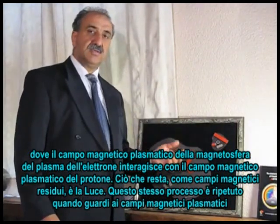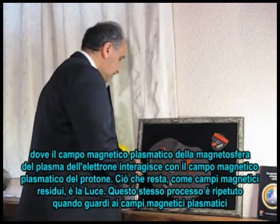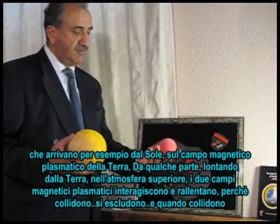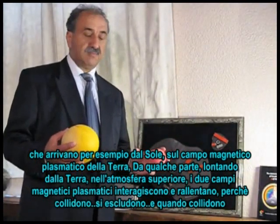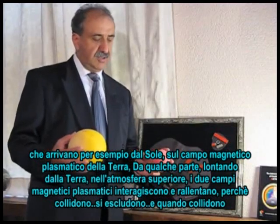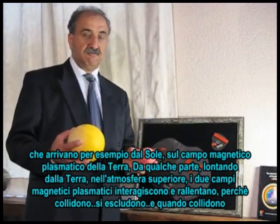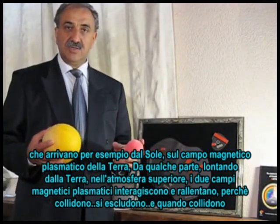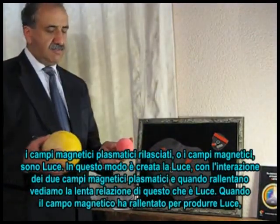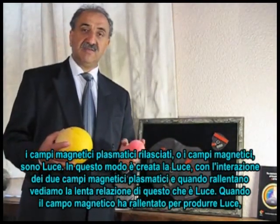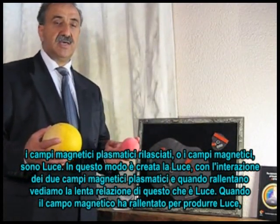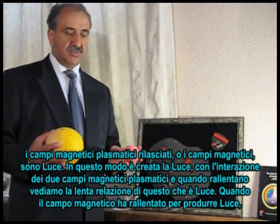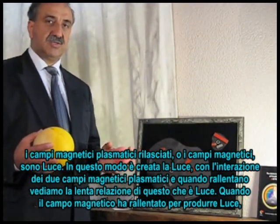This same process is repeated when we look at the plasmatic magnetic fields arriving from the sun to the plasmatic magnetic field of the earth. Somewhere in the upper atmosphere the two plasmatic magnetic fields interact and slow down because they collide with each other. When they collide, the magnetic fields left over is light, and that's how light is created. Through the interaction of two plasmatic magnetic fields when they slow down, we see that slow motion as light.